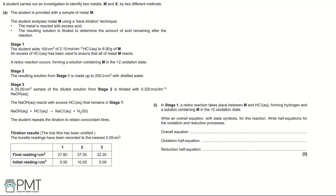The student repeats the titration to obtain concordant titers. The trial titer has been omitted, and the burette readings have been recorded to the nearest 0.05 cm³.